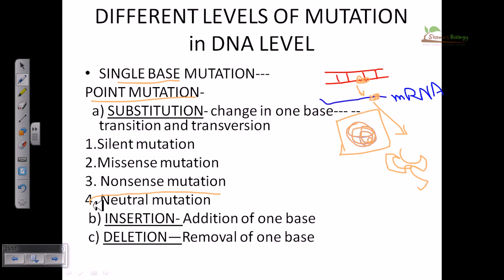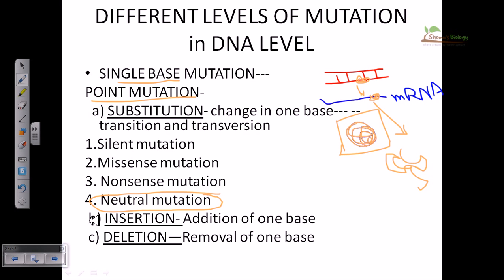Among substitution mutations we can have different types: silent mutation, missense mutation, nonsense mutation, and neutral mutation. The neutral mutation, as the name suggests, results in neutrality — the mutation will not damage the DNA and will not damage the protein expression. But all the different types of mutation can have different dangerous effects on protein expression.